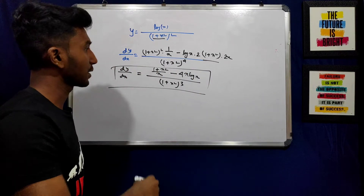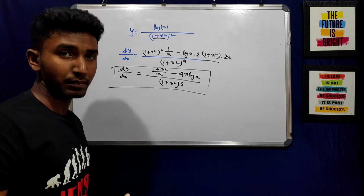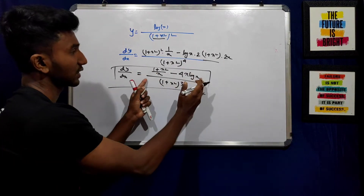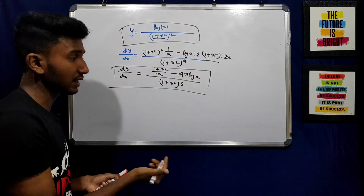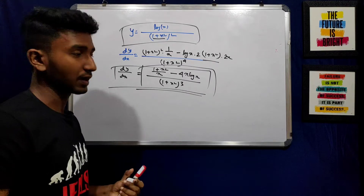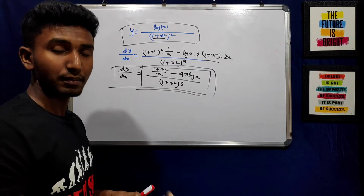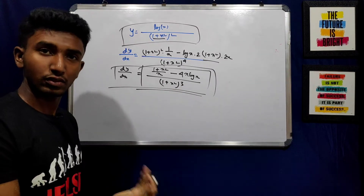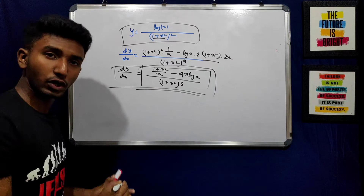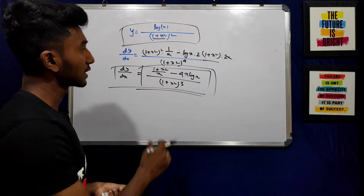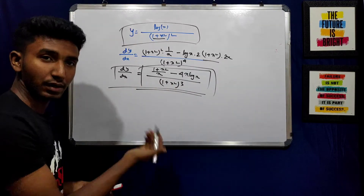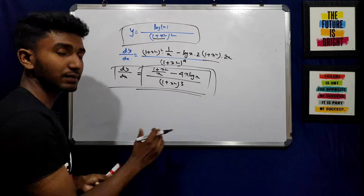If we set dy/dx equal to 0, we get the point of maximum or minimum. Then we check the double derivative. For a competitive exam, we may not always need the double derivative. In board or HS exams, we check methods correctly, but for MCQ-based competitive exams, we need the correct answer quickly. So should we use the double derivative or is there another method?